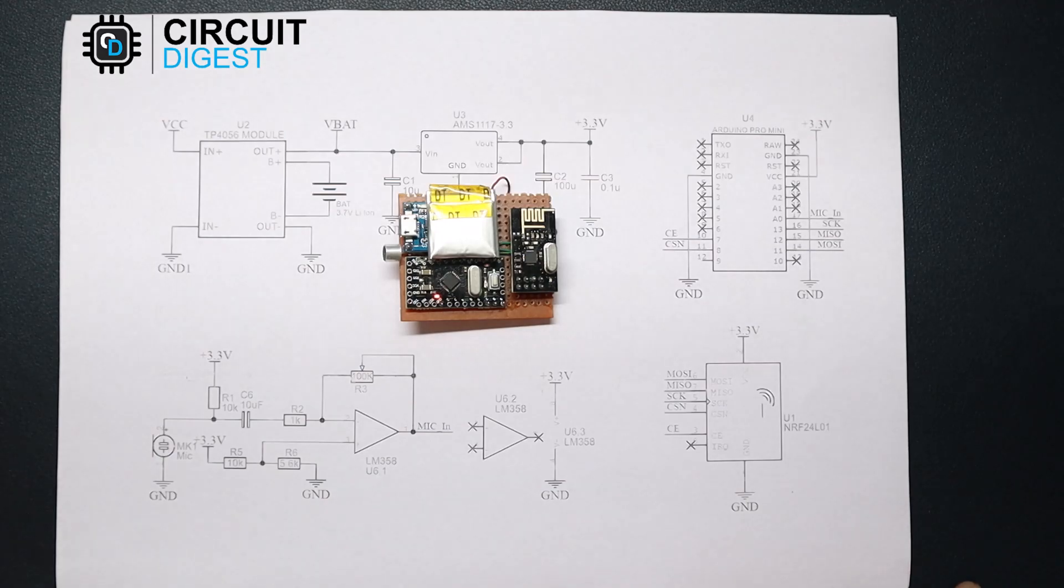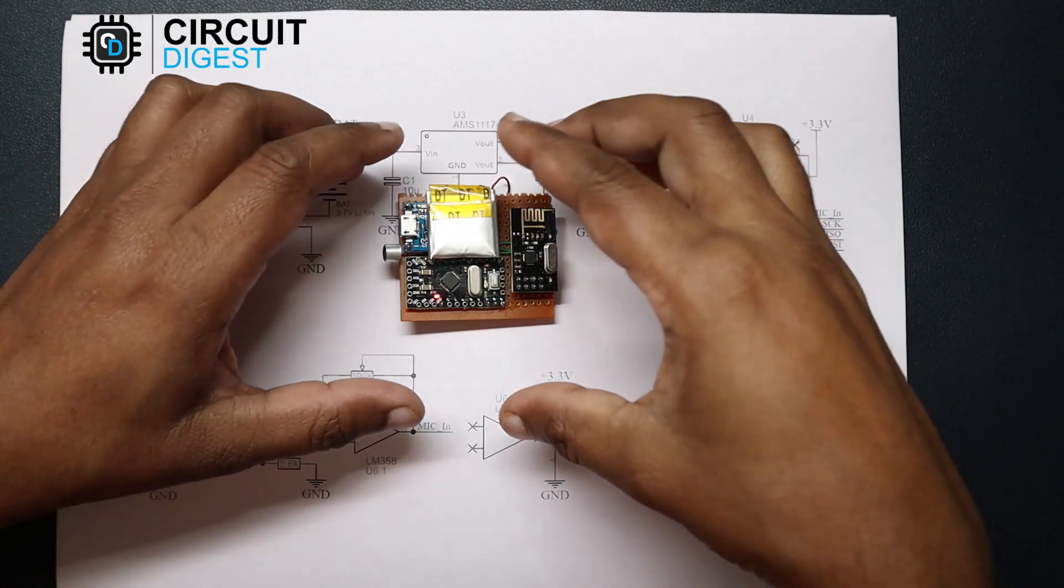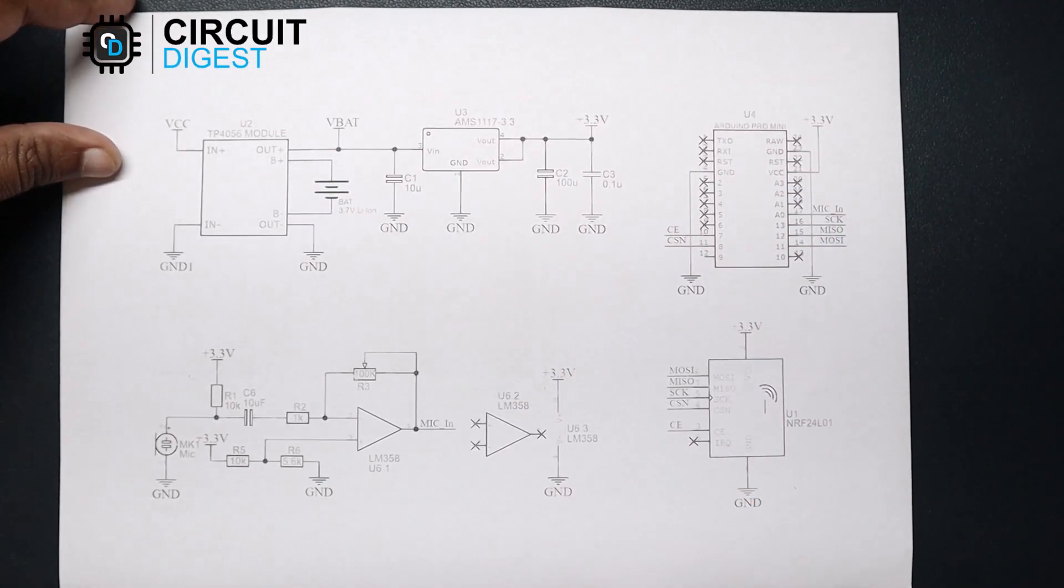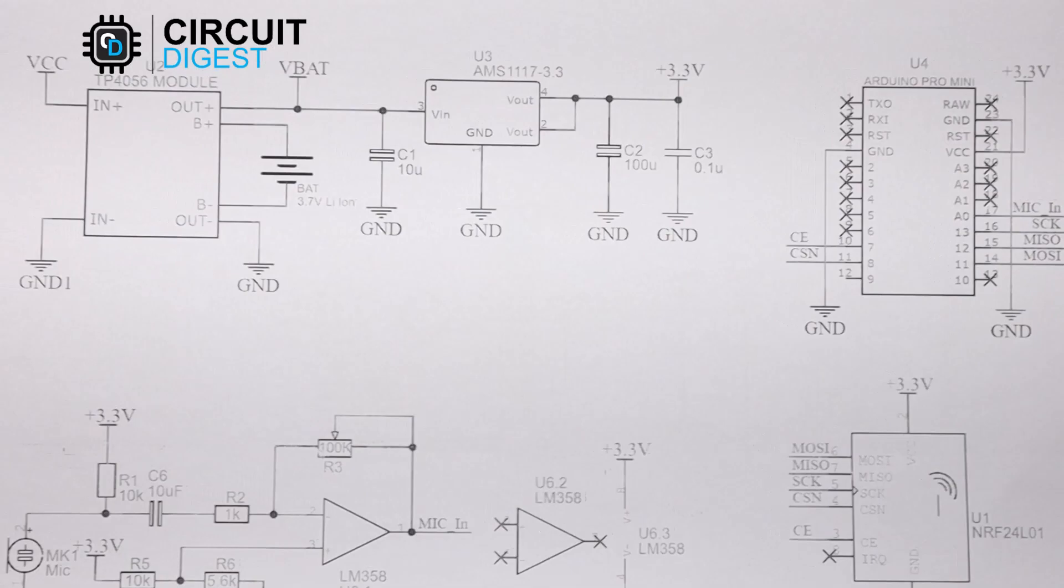Now let's have a look at the circuit diagrams. Here is the schematics for the transmitter. The transmitter mainly has four sections.